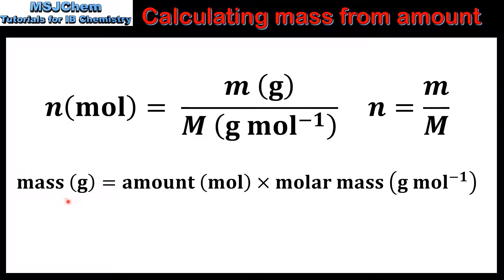So mass in grams equals amount in moles multiplied by molar mass. Here we have an easy way to remember this equation. Lowercase m which is mass in grams equals n which is amount in moles multiplied by uppercase M which is molar mass.